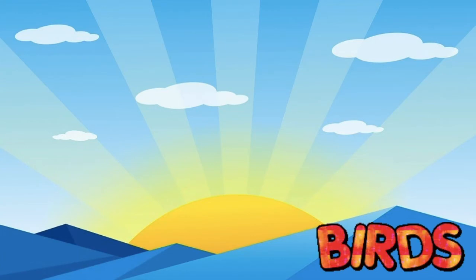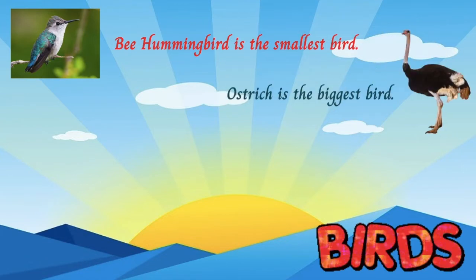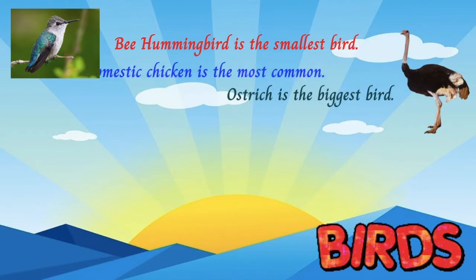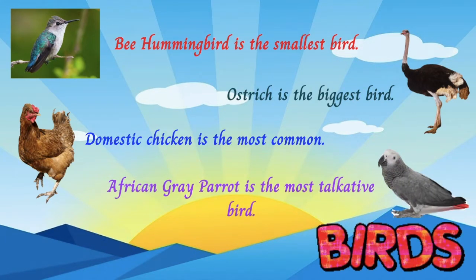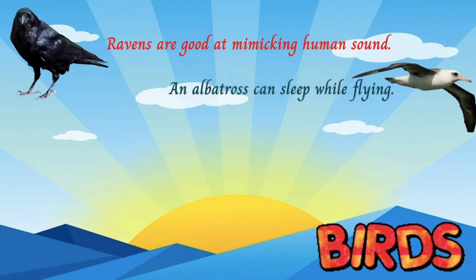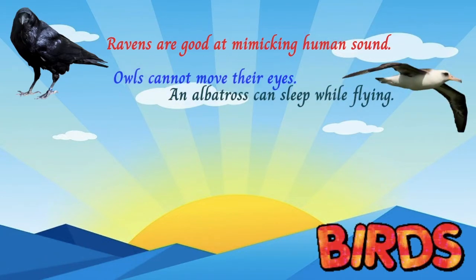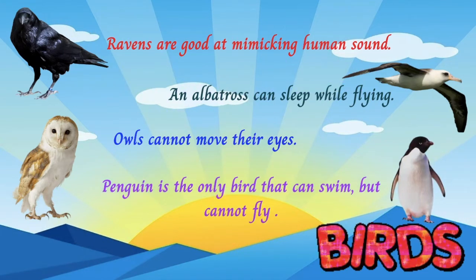Some trivia about birds: the hummingbird is the smallest bird in the world, while the ostrich is the largest. Domestic chicken is the most common bird. The most talkative bird in the world is the African grey parrot. Ravens are great at mimicking human speech and sounds. An albatross can sleep while it flies. Owls can turn their heads almost 360 degrees but cannot move their eyes. The penguin is the only bird that can swim but cannot fly, and also the only bird that walks upright.